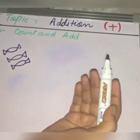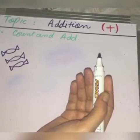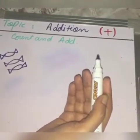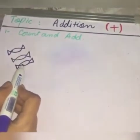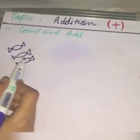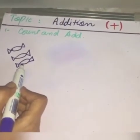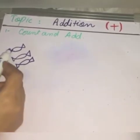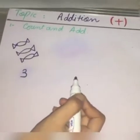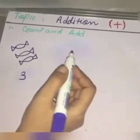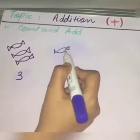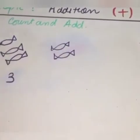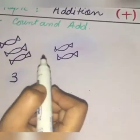Let me tell you a story of a good girl. Sarah is a very good girl and she behaved very well, so her grandmother gave her three toffees. How many toffees does Sarah have? She has three toffees. Now her grandfather gave her two more toffees. How many toffees did her grandfather give her?